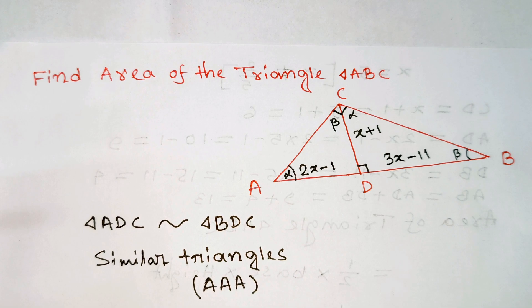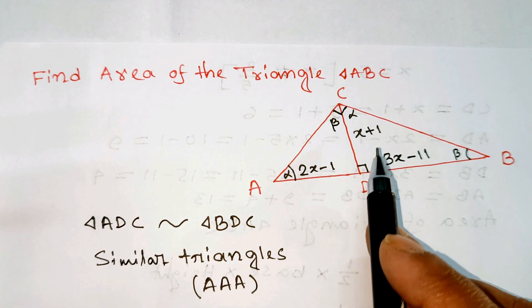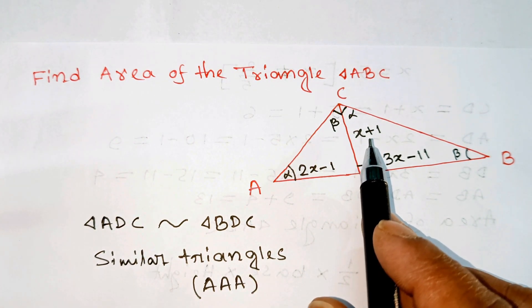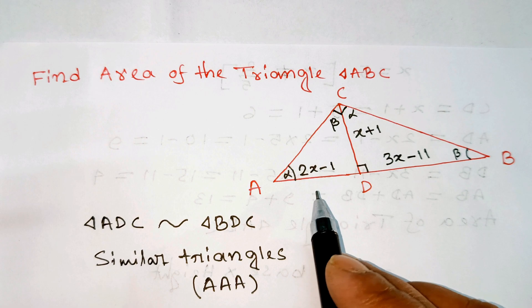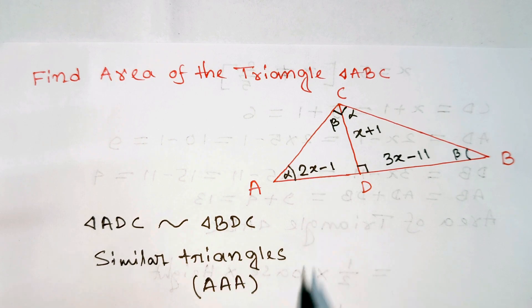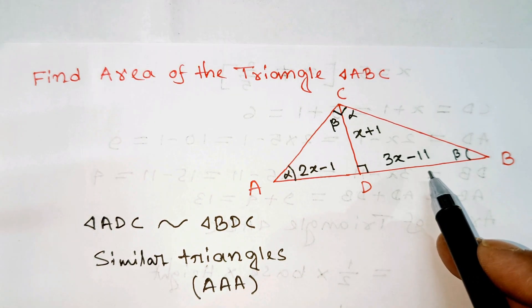The altitude CD is represented by x plus 1. Moreover, this line segment AD is represented by 2x minus 1, and this line segment DB is represented by 3x minus 11.